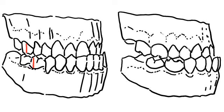Class 3 malocclusions occur when the lower teeth are too far forward, often overlapping with the upper front teeth. This is commonly referred to as an underbite. A protrusive lower jaw or a retrusive upper jaw can be the cause.